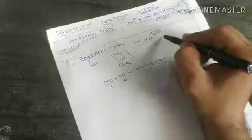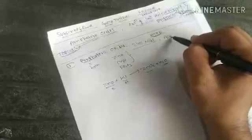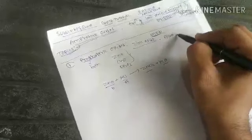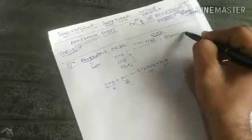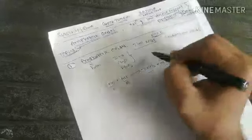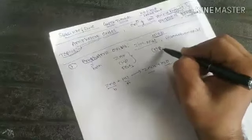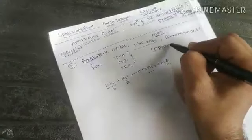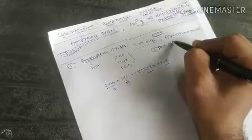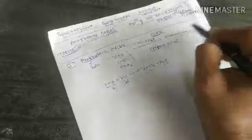Then we have aluminum oxide (Al₂O₃). We also have copper oxide (CuO). These are the three examples of amphoteric oxides to remember.